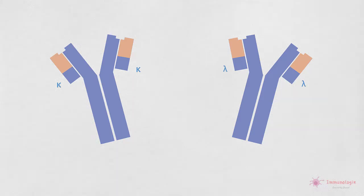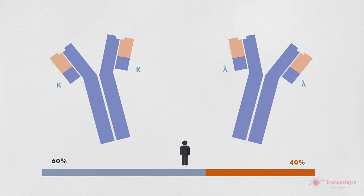Chez l'homme, environ 60% des molécules d'anticorps ont des chaînes légères kappa et environ 40% ont des chaînes légères lambda. Chez la souris, les anticorps contenant les chaînes kappa sont environ dix fois plus abondants que les anticorps contenant la chaîne lambda.